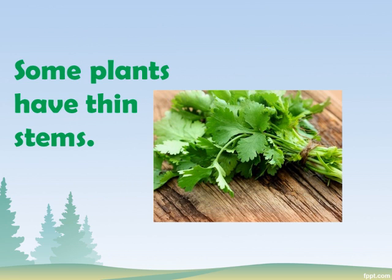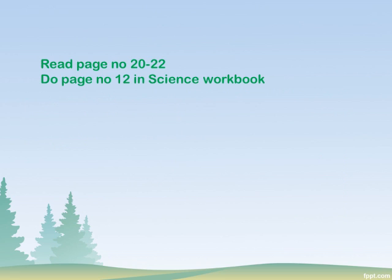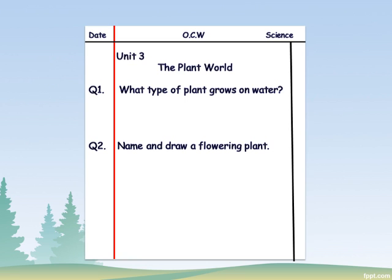You can see the picture of coriander — it has a thin stem. This is your home task: you will read pages 20 to 22 and solve page number 12 in your science workbook. You will do this work in your new notebooks, and first you have to mention the unit.